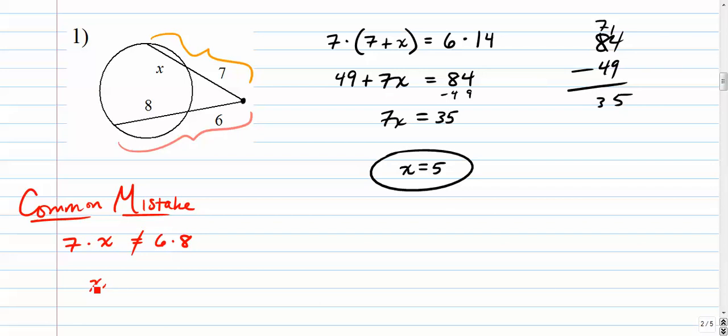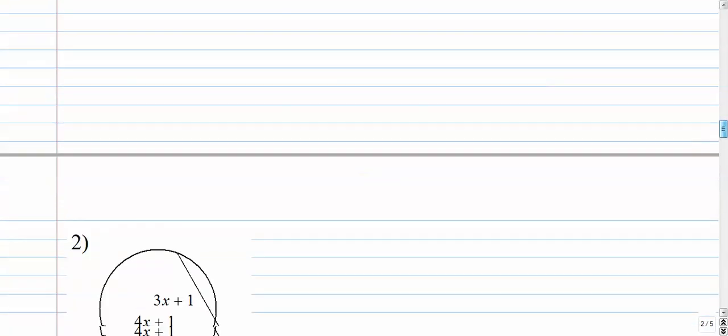Also, some people tend to start with the wrong piece. They'll say x times the quantity 7 plus x is equal to 8 times 14. They'll start with this segment instead of the one that they should be starting with. The one that's closest to the point of intersection. So be careful with some of those really common mistakes that I see a lot.